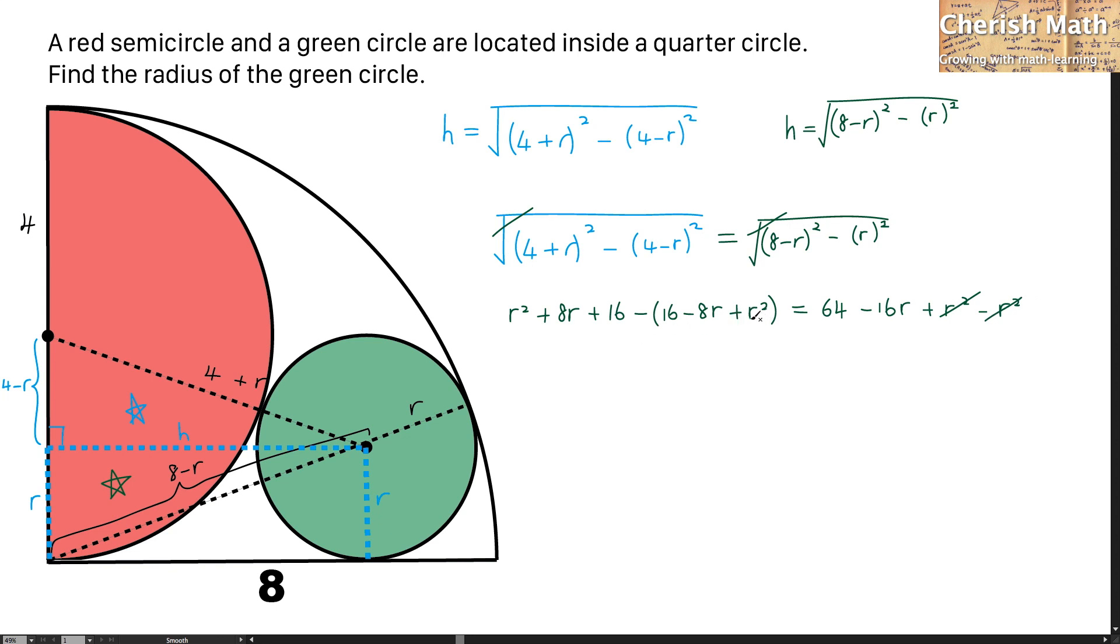This is dropped. So, this is dropped. 16 is gone. 8r plus 8r, I get 16r equal 64 minus 16r. So now, 16r added with the 16r is 32r equal to 64. So the value of the r, eventually, 64 divided by 32 is 2 units.